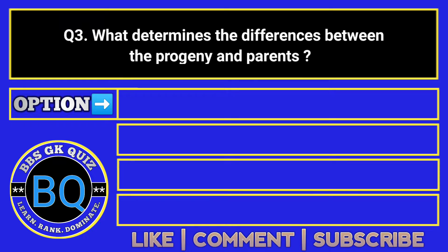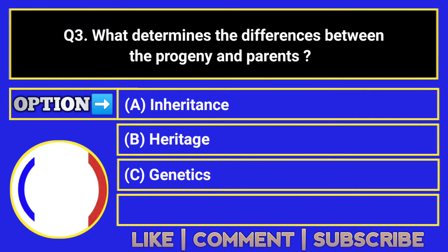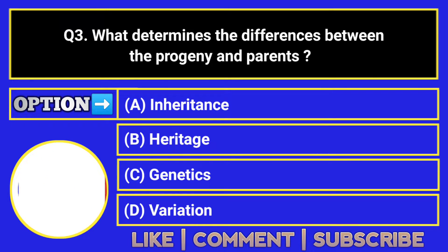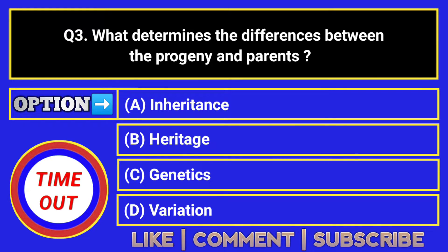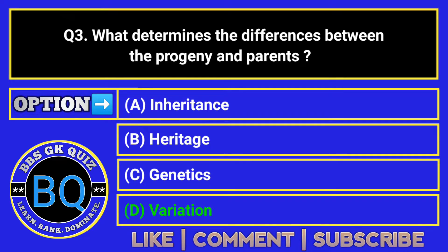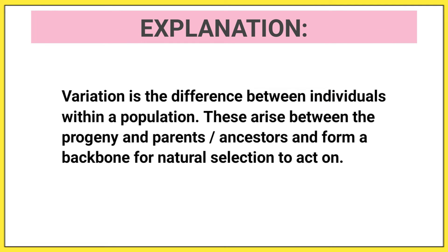What determines the differences between the progeny and parents? The correct answer is Option D. Variation is the difference between individuals within a population. These arise between the progeny and parents' ancestors and form a backbone for natural selection to act on.